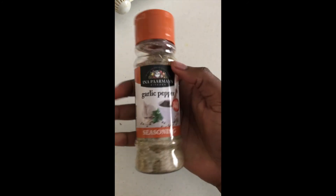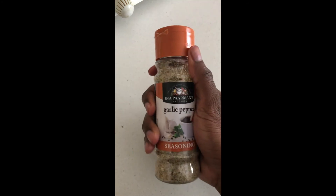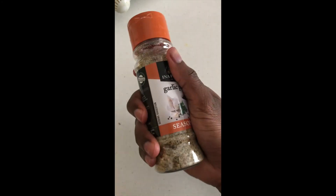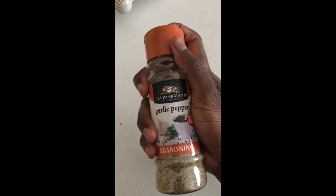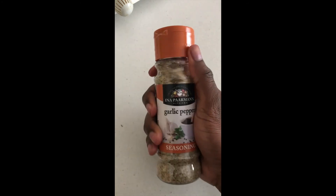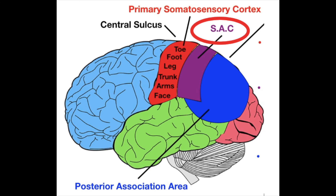Imagine holding a bottle of spice. If you close your eyes and I put that object in your hand, you'll be able to feel the shape and texture of the object, and recognize it's probably a spice bottle because you've felt it before — using memory. You'll also be able to tell if it's in your right or left hand without even seeing it. That is the core function of the somatosensory association cortex.